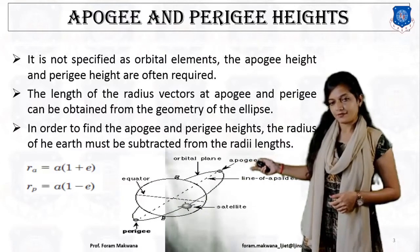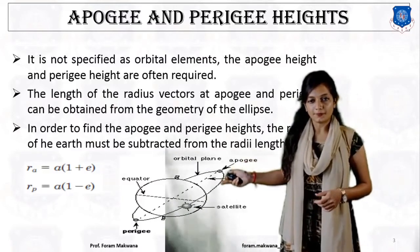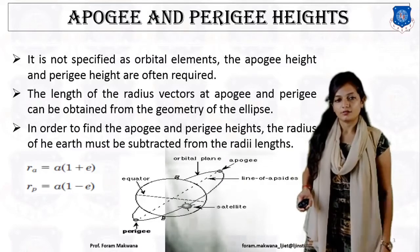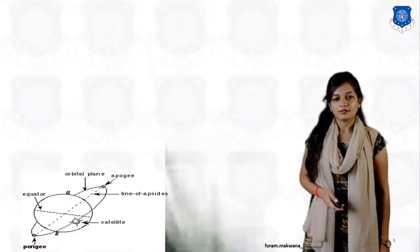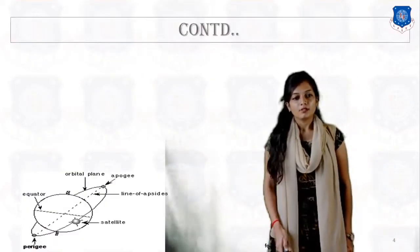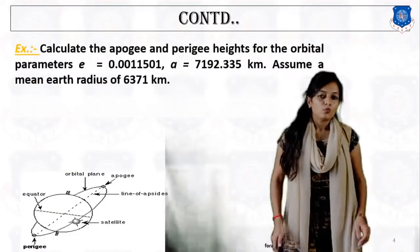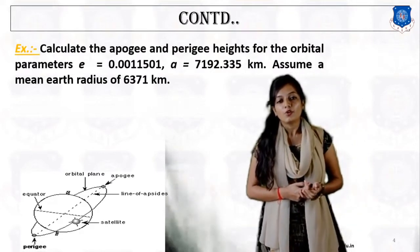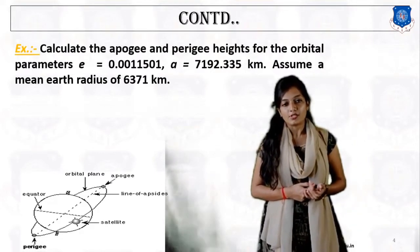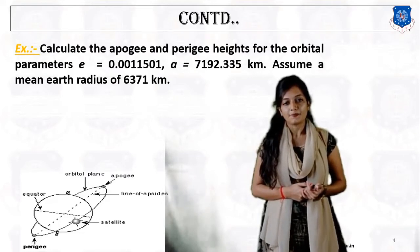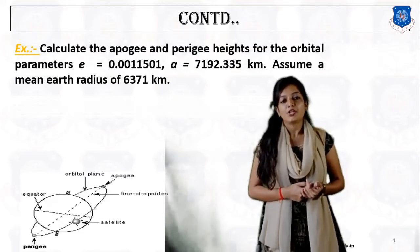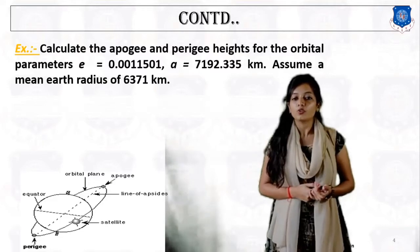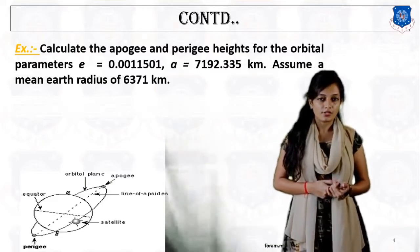This diagram is for reference, which we already discussed in the last session. Now we are going to calculate the radius of apogee and perigee, and if those radii are given, we will calculate the height of apogee and perigee.